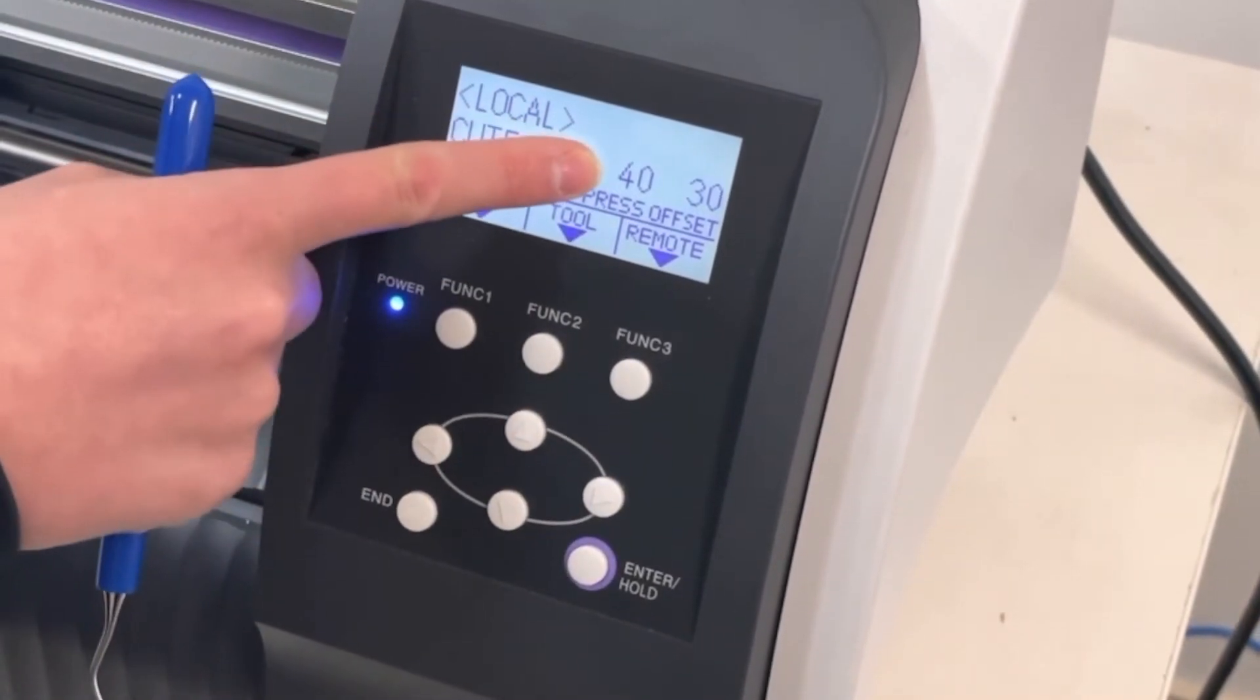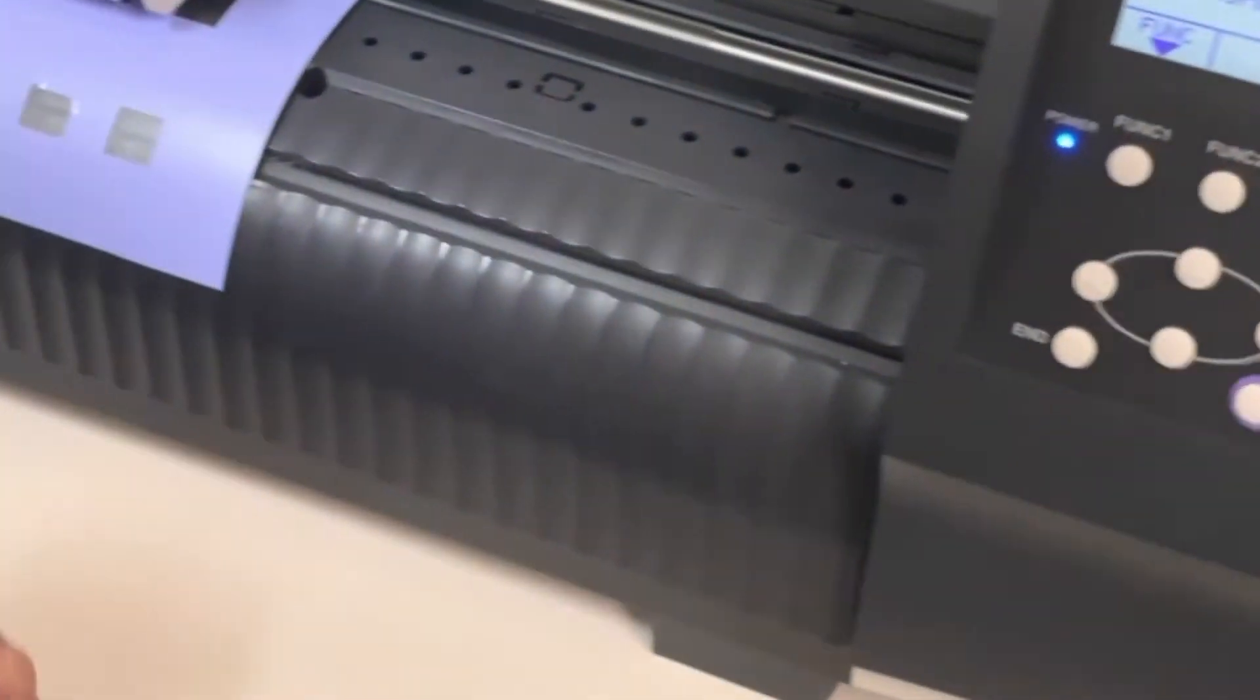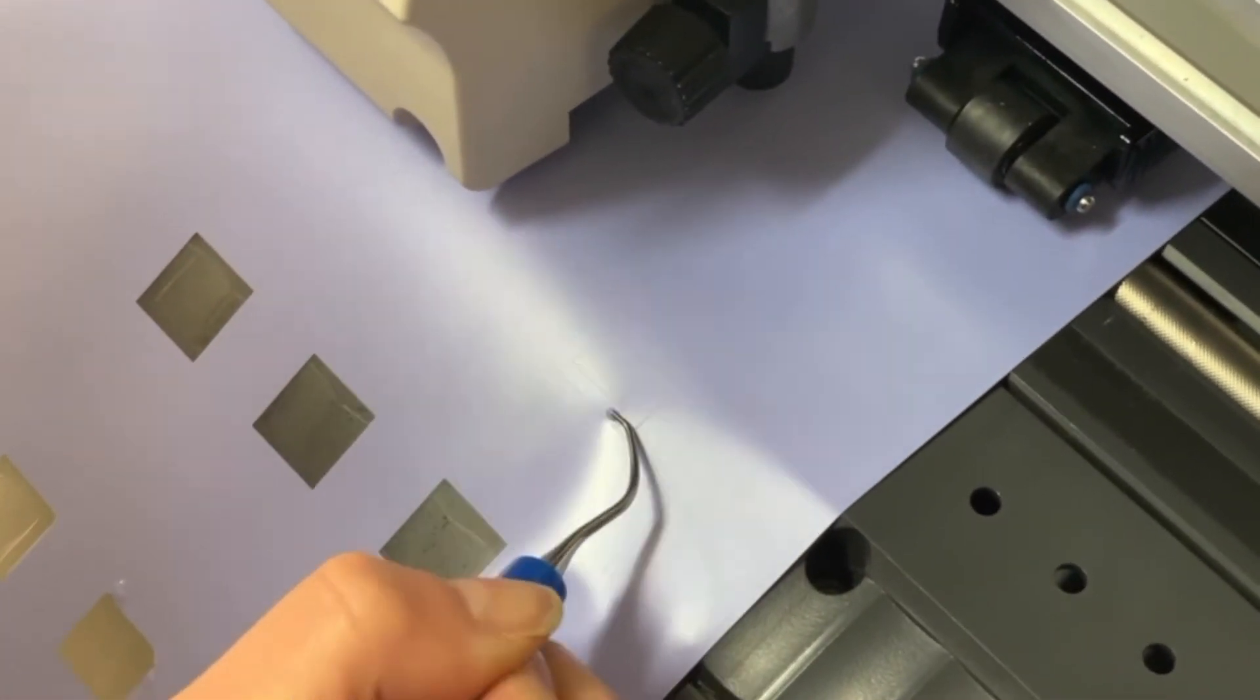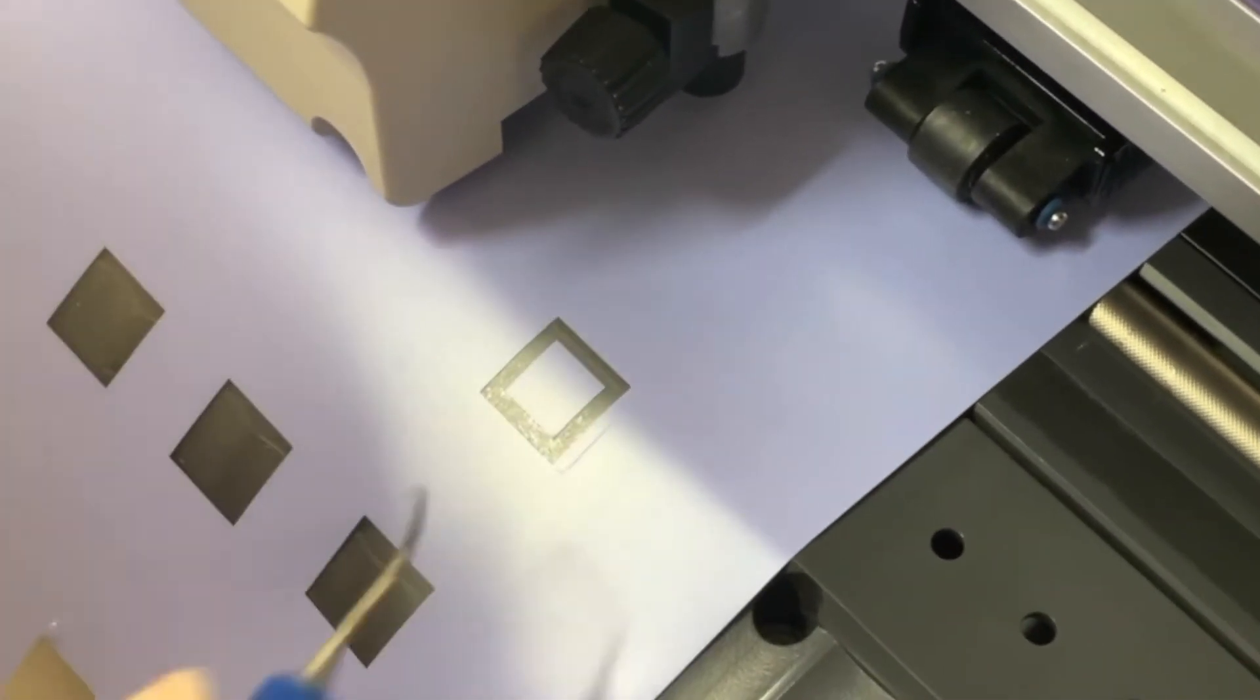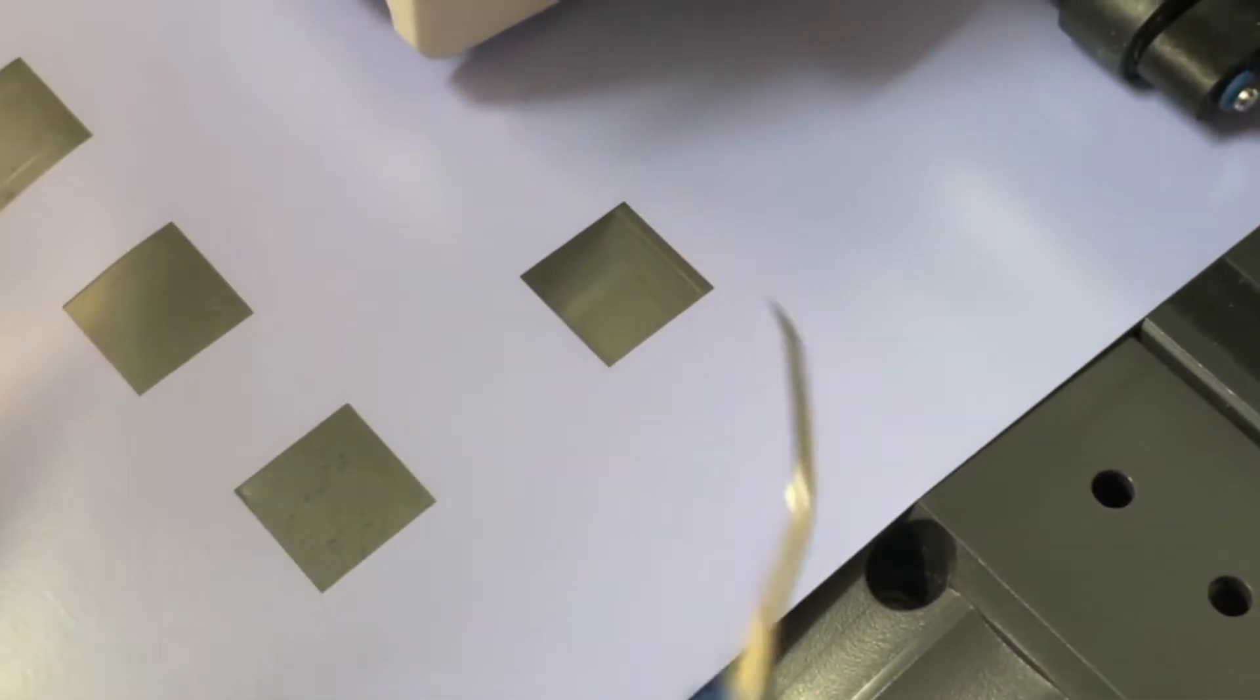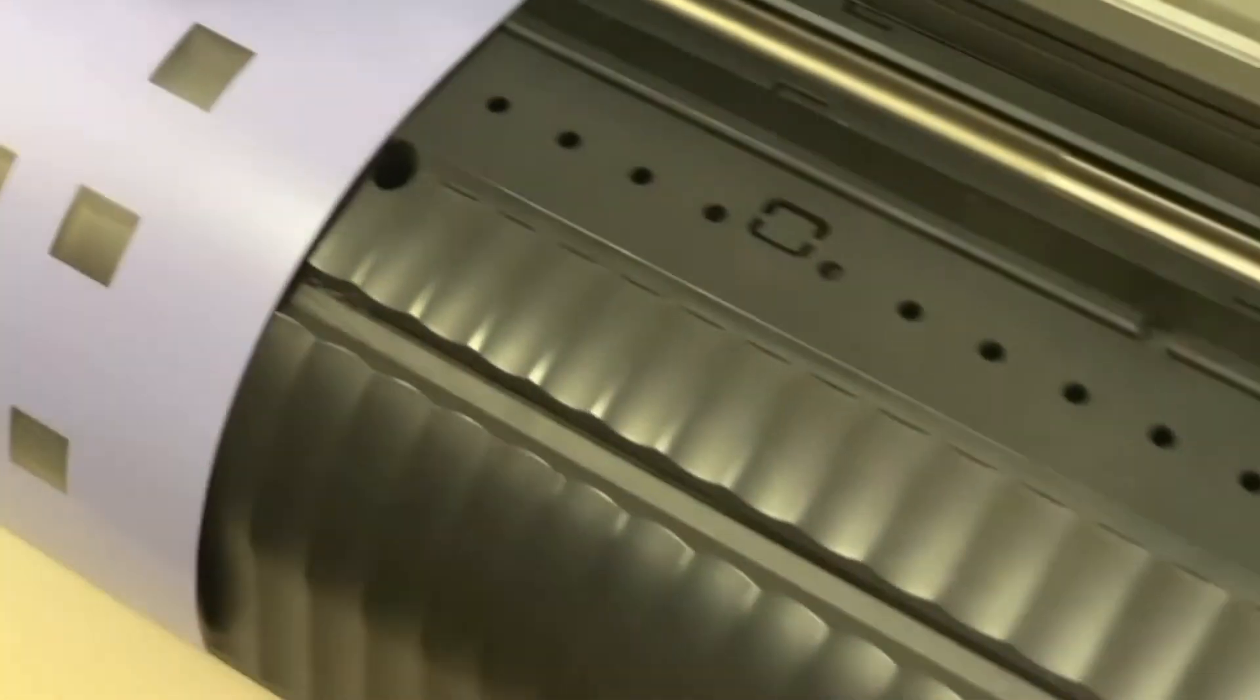So we're starting this. This one is a new Mimaki blade, so we're starting it at 40. I'm going to do my test cut and bring it forward here. Pull out a little bit of this vinyl. So it does look like it's cutting quite well, but I can't see any scoring at all on the backing there. You do want to see a little bit, so I'm going to increase this one.